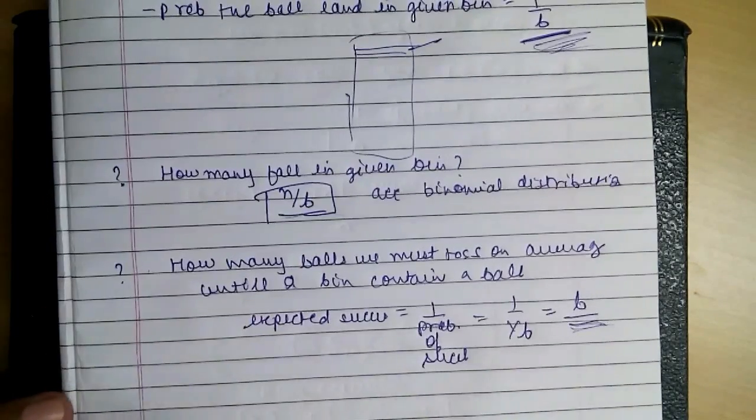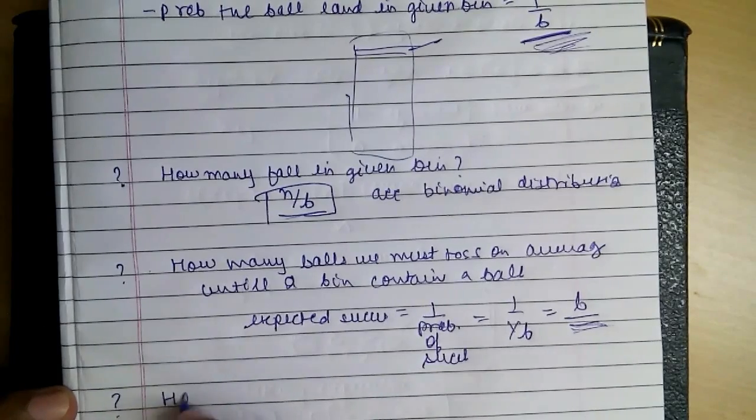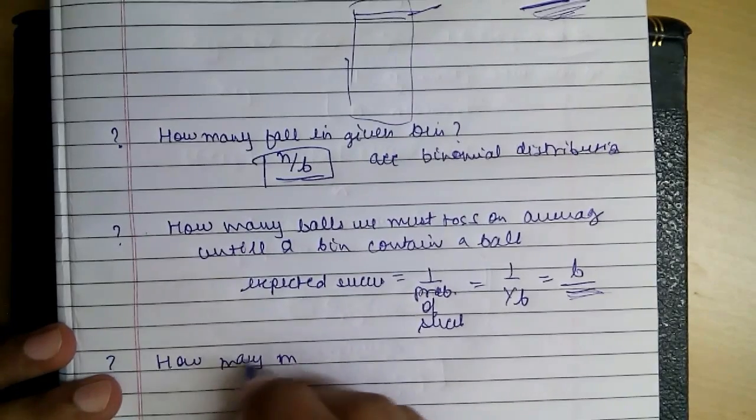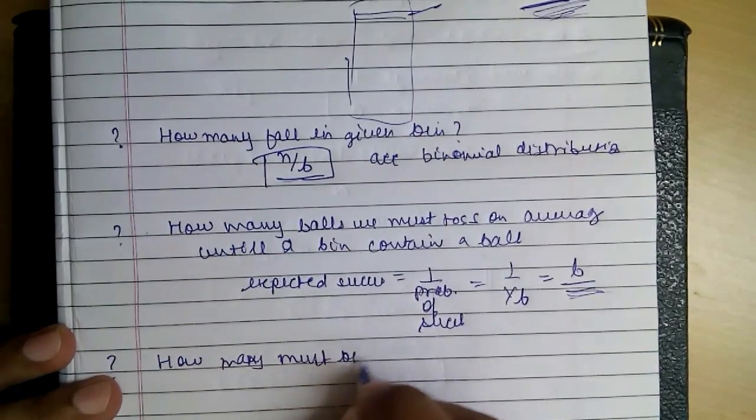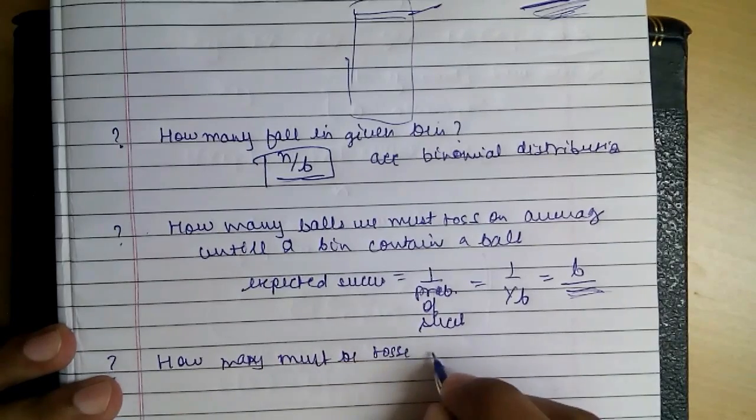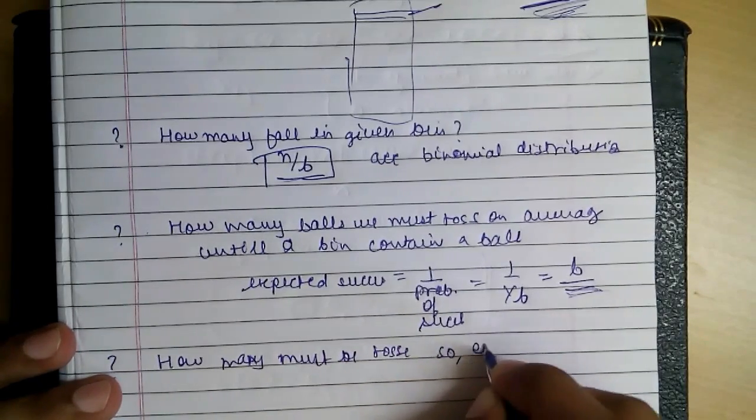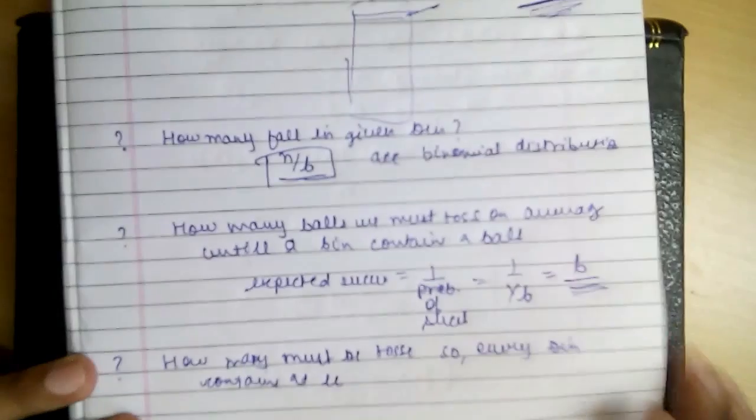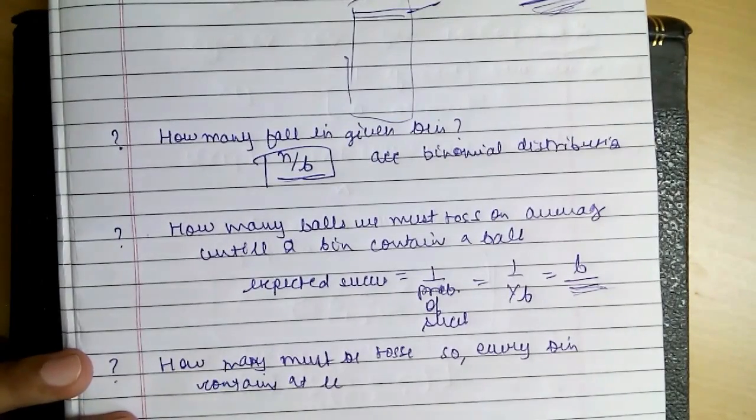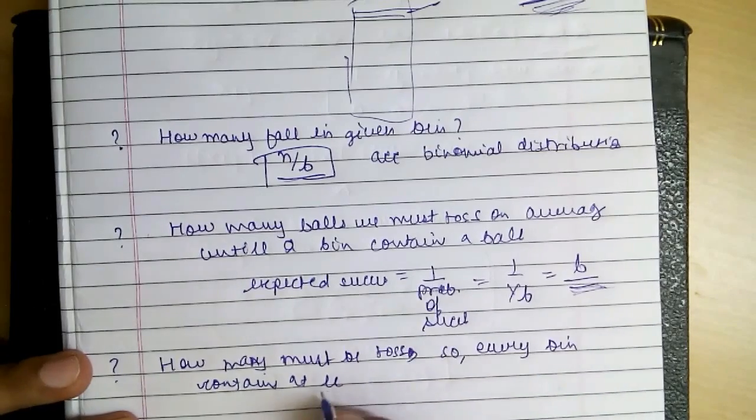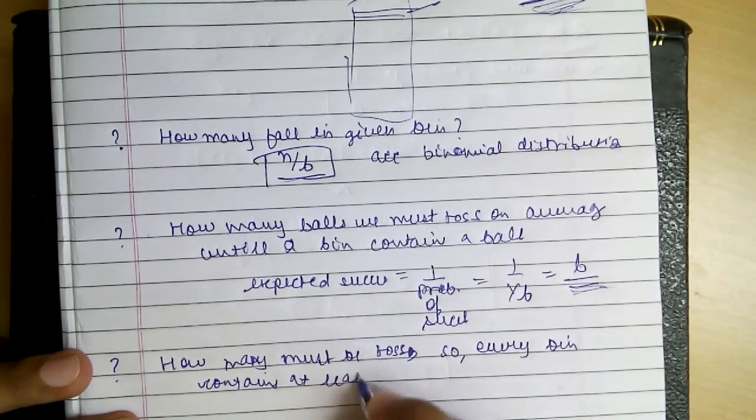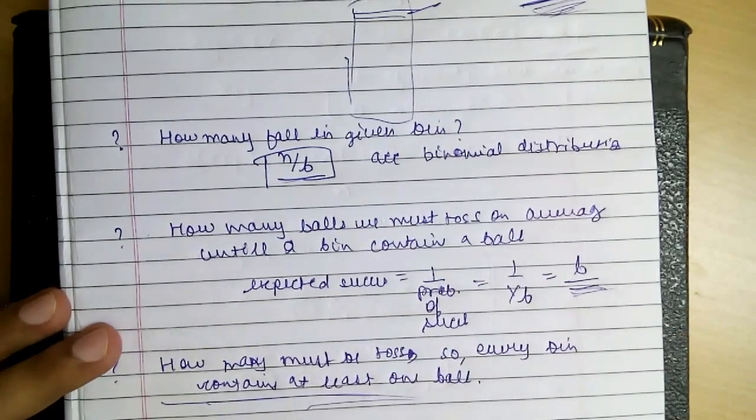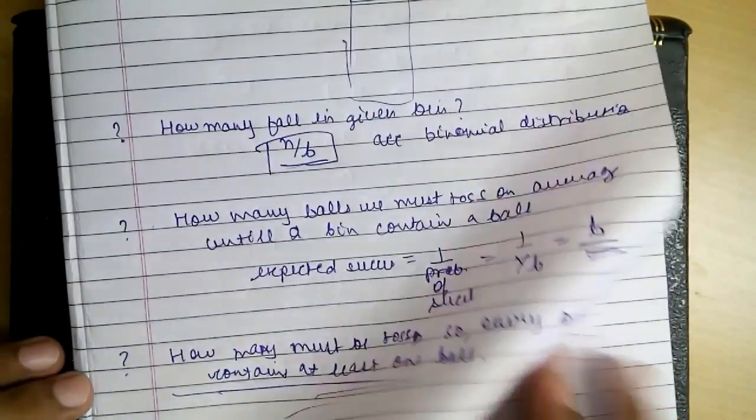Now, the third one is, how many must be tossed so that every bin contains at least one ball? This will be a long one and we will be analyzing it.